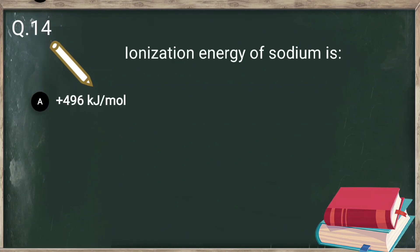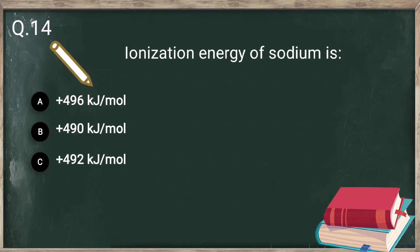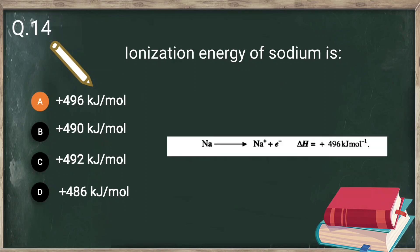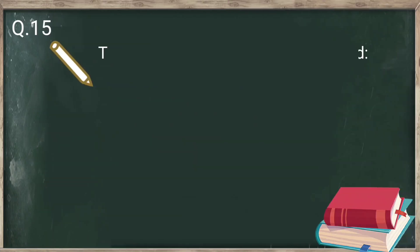Question number 14: the ionization energy of sodium is 496 kilojoules per mole. If you want to remove the valence electron from sodium, you need to provide +496 kJ/mol of energy. The positive sign indicates that energy is being provided.